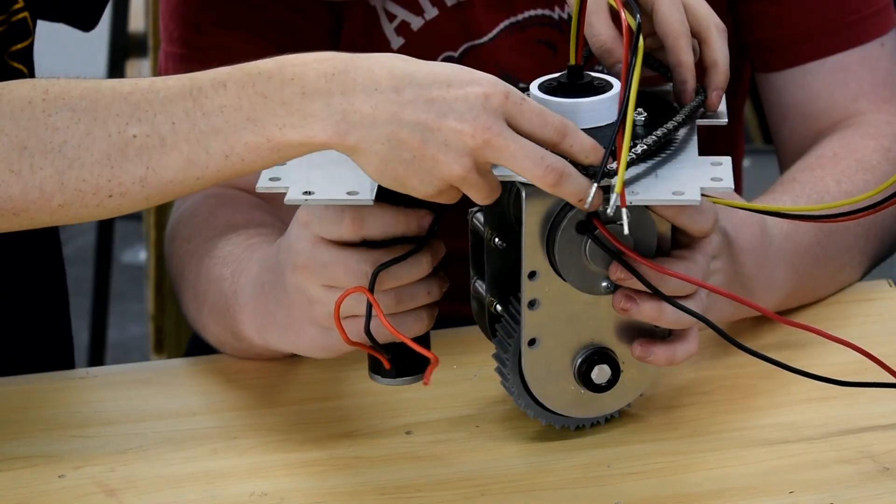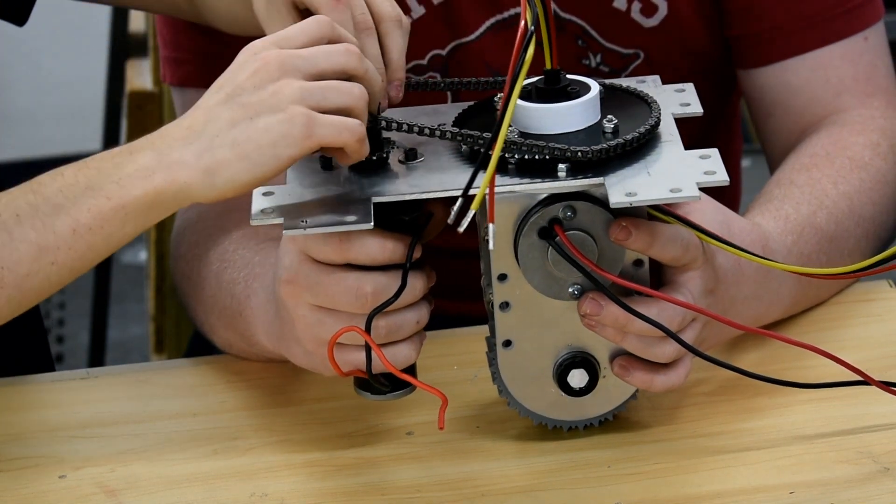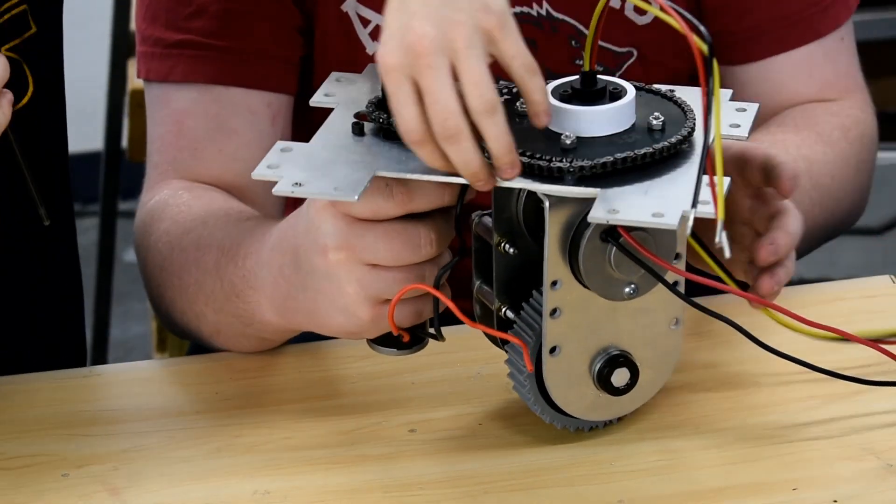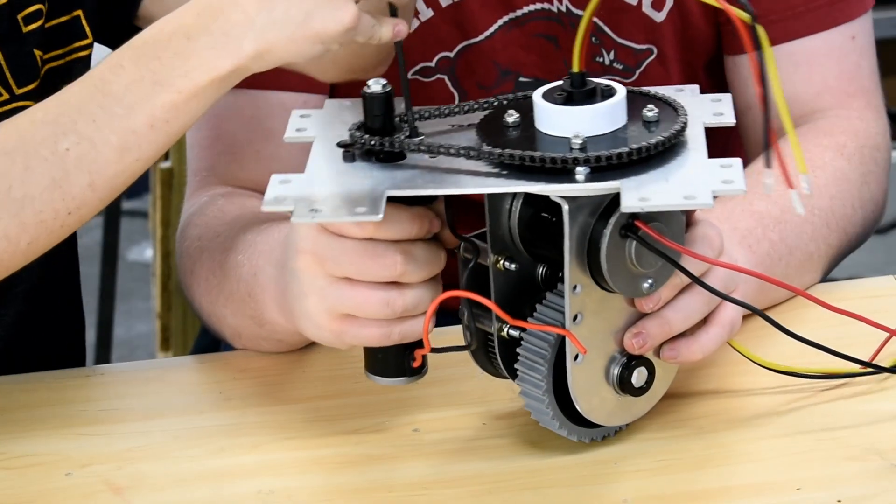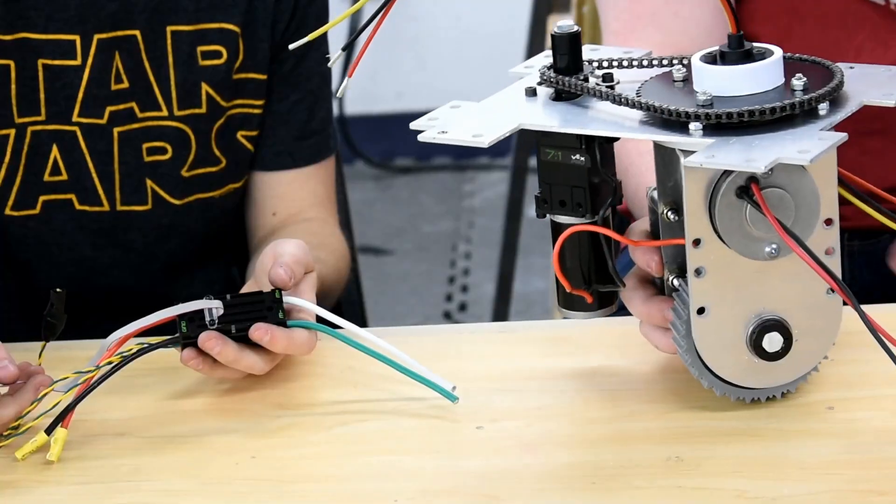Now place the number 25 chain on the sprockets. Rotate the steering motor to loosen the chain and rotate it back to tighten it, then tighten the mounting bolts. Use Talon SBX for drive motors.